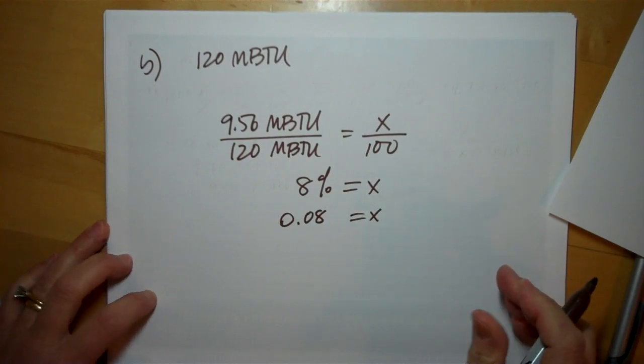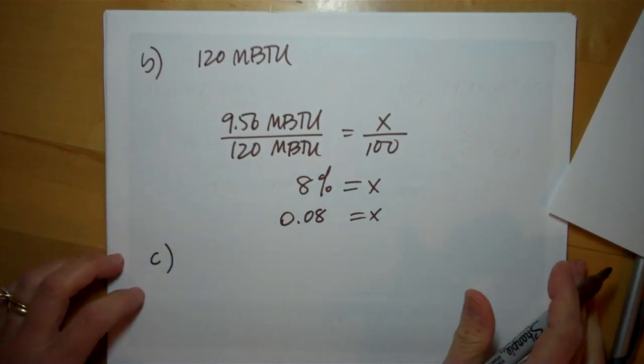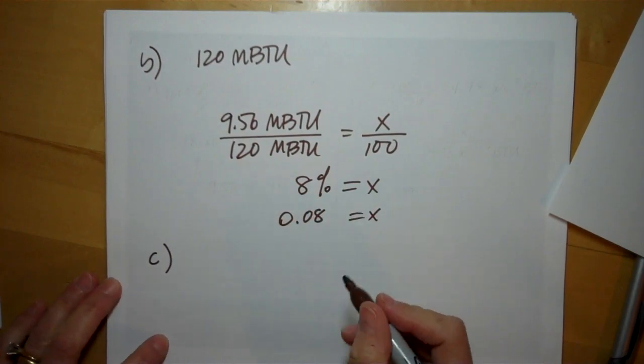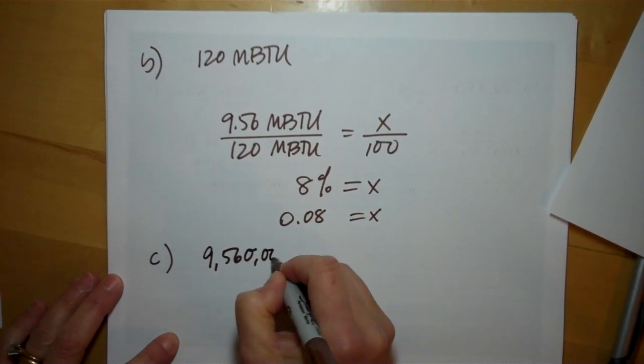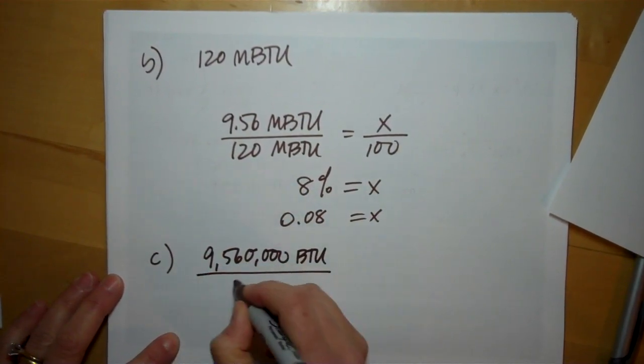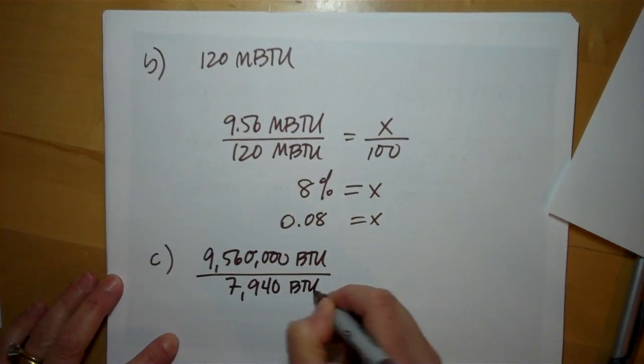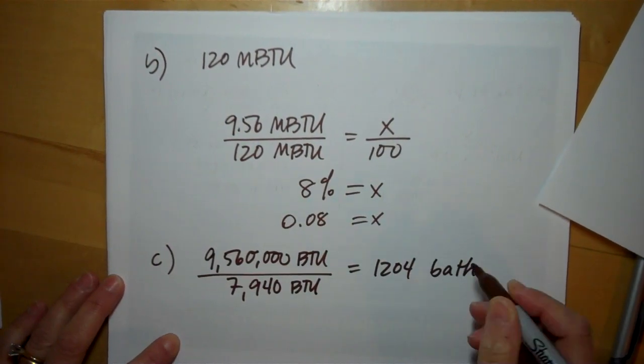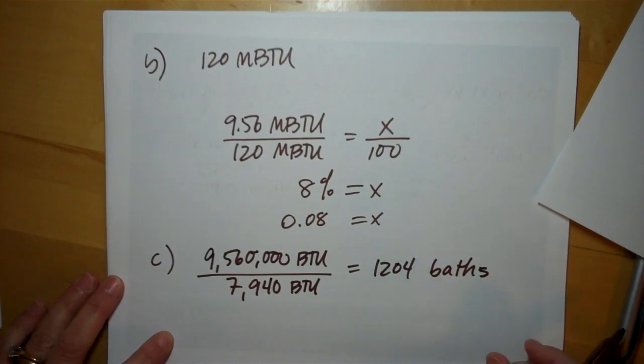Question C is kind of a strange question: how many baths could you heat up with this energy? If you have 9 million 560 thousand BTUs of energy coming from your solar panel, and each bath takes almost 8000 BTUs, then you could heat up 1204 baths with your solar energy.